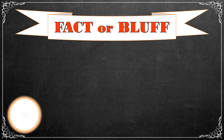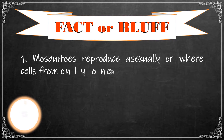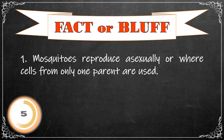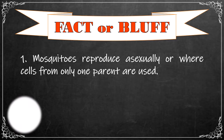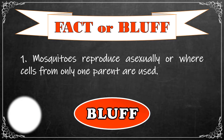Number 1: Mosquitoes reproduce asexually, where cells from only one parent are used. The correct answer is bluff, because mosquitoes reproduce sexually and undergo internal fertilization.